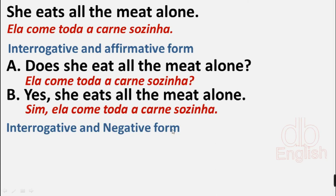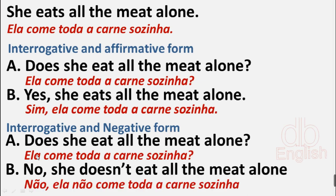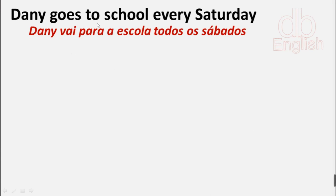Interrogative and negative form. A: Does she eat all the meat alone? B: No, she doesn't eat all the meat alone.